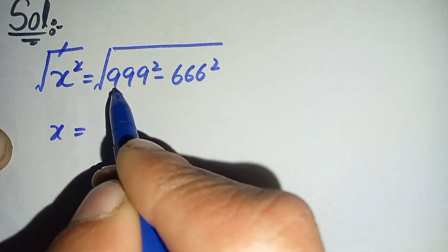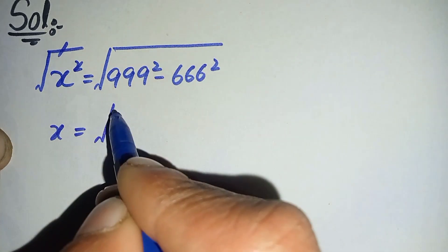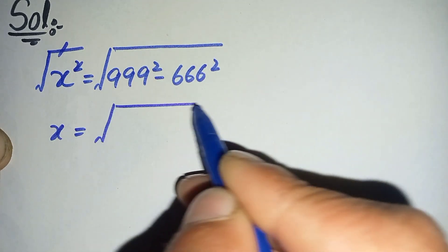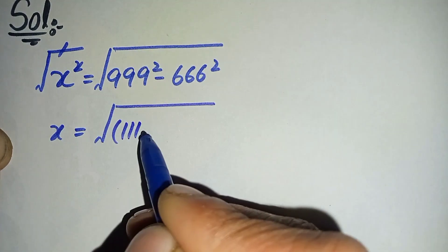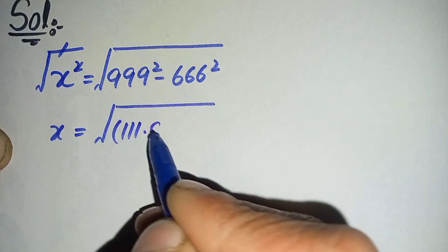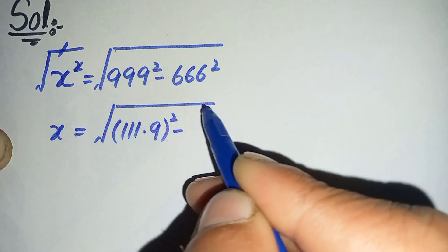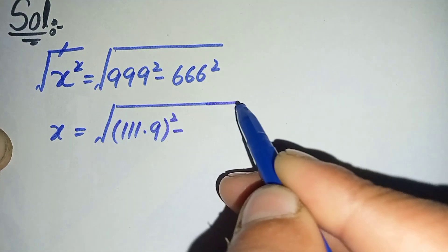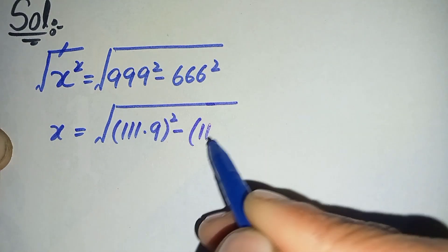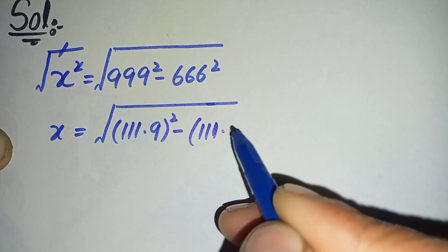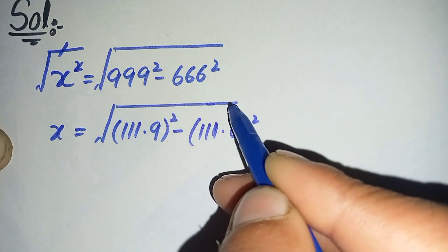And here we will factorize these two numbers. So 999 can be written as 111 times 9, whole squared, minus 666 squared can be written as 111 times 6, whole squared.